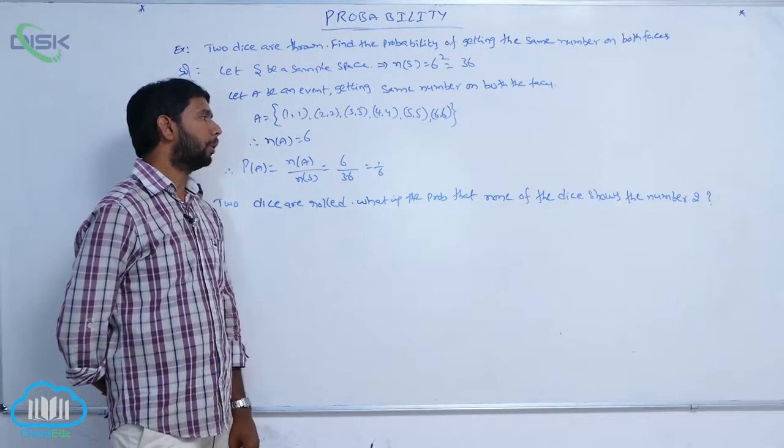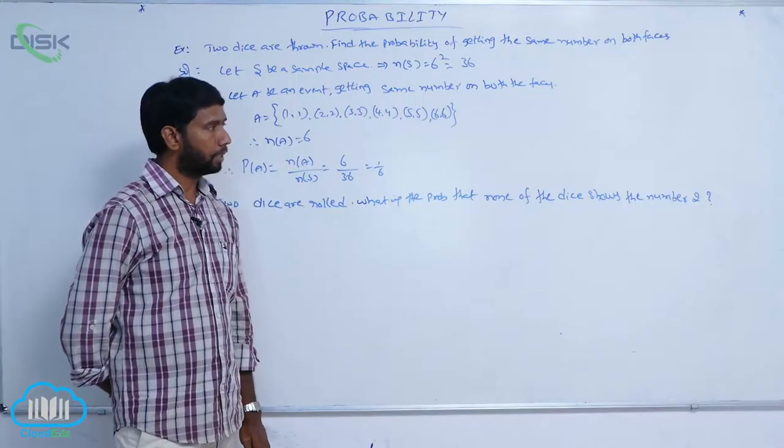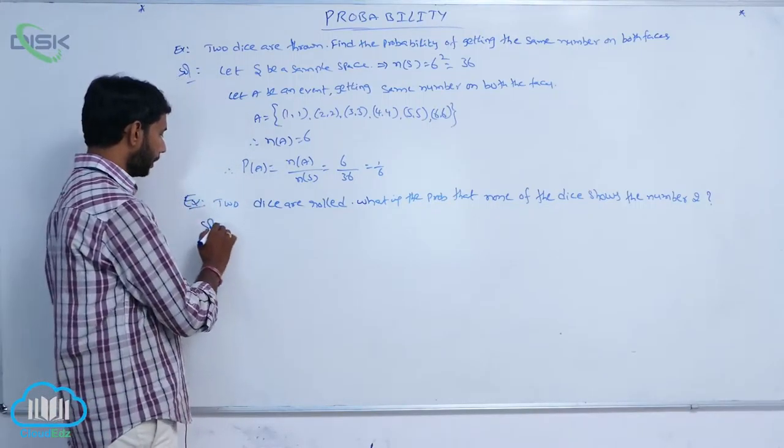Two dice are rolled. What is the probability that none of the dice shows the number 2? Let S be the sample space.